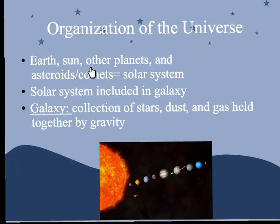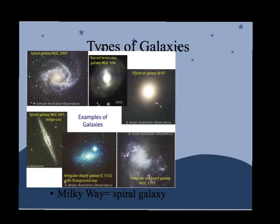The Earth, sun, other planets, asteroids, comets — all of that stuff makes up a solar system. There are many solar systems included in a galaxy. A galaxy is a collection of stars, dust, and gas, all held together by a gravitational force. There are a couple different types of galaxies. We have our spiral galaxy, which is what our Milky Way is made up of.